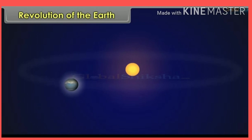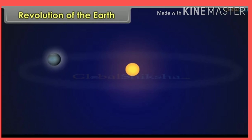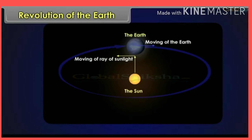The earth moves around the sun on a fixed path which is known as the orbit. The orbit of the earth is elliptical, and the earth completes its revolution in one year — 365 and one-fourth days.